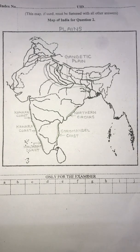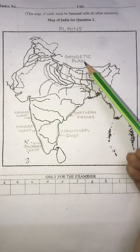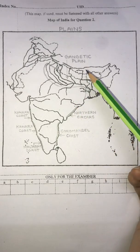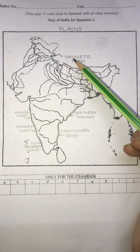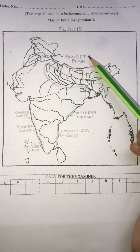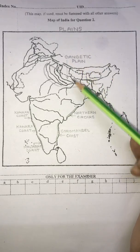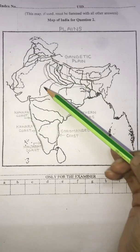In this video, we learn how to mark and shade plains on the map of India. Let's begin with the Gangetic Plain. As the name suggests, this is the plain of the river Ganga — 'Gangetic' referring to the river Ganga and its tributaries.